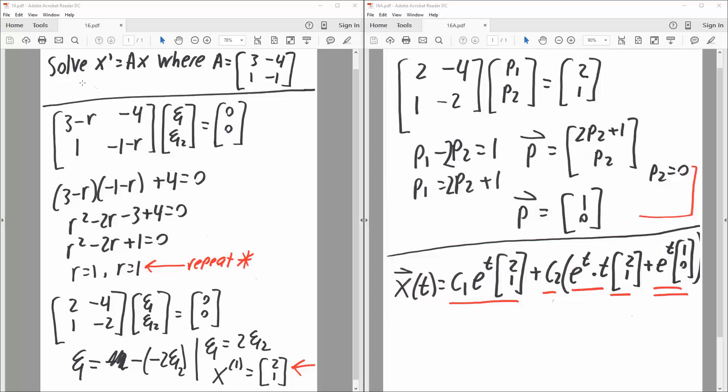Okay, in this video we want to solve for x prime equals ax, where a is denoted by this 2 by 2 matrix.